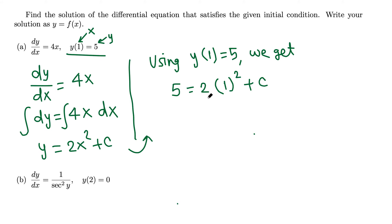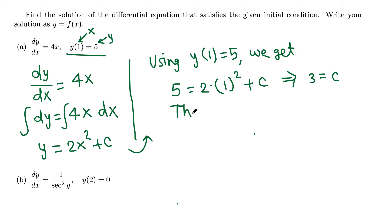2 times 1 squared is 2. Subtract 2 from both sides: 5 minus 2 gives 3 equals c. Substituting back, y equals 2x squared plus c, and since c equals 3, the final answer is y equals 2x squared plus 3.